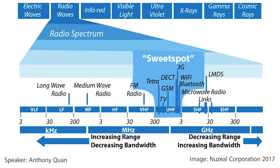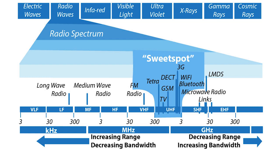Hello there. In modern society, we are becoming incredibly reliant on wireless communication. But without the radio spectrum, none of this would be possible. The radio spectrum is responsible for the propagation of data for some of our favourite activities, such as watching TV, listening to the radio, browsing the internet, or making phone calls.